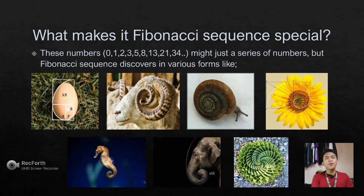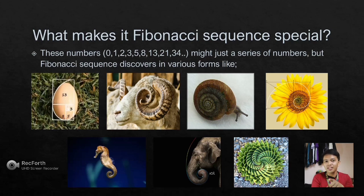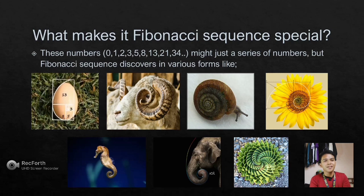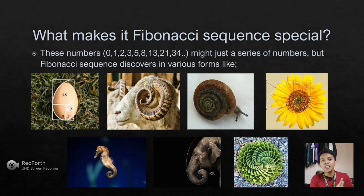Why is the Fibonacci sequence so special? Examples include the egg, the horn of a ship, the snail, the sunflower, the seahorse tail, the nose of an elephant, and the flower — all showing a twirl or spiral ratio. These are the various forms that illustrate the Fibonacci sequence. Everywhere and anywhere, the Fibonacci sequence is present.